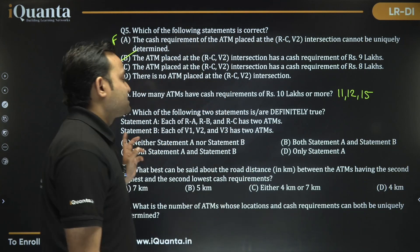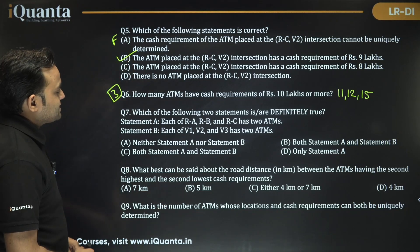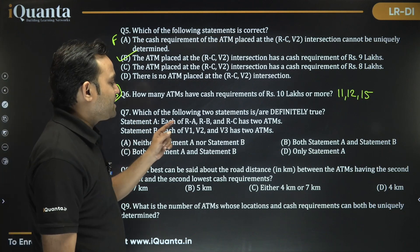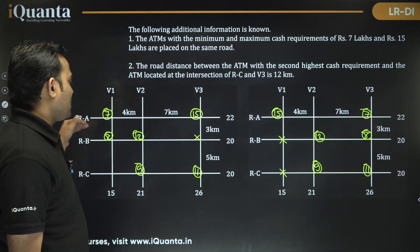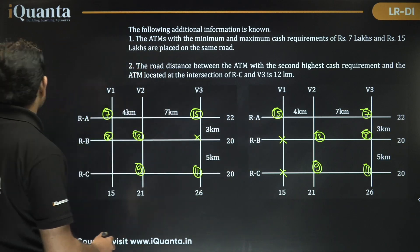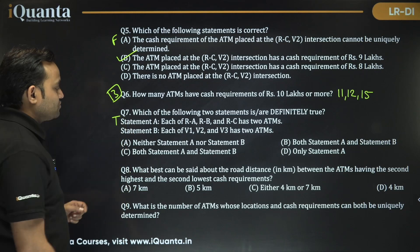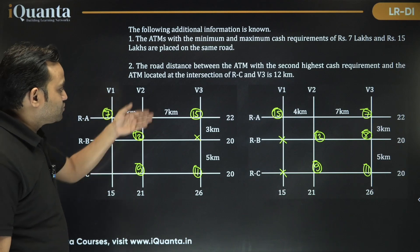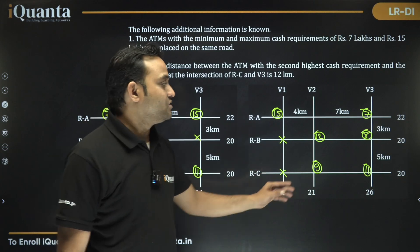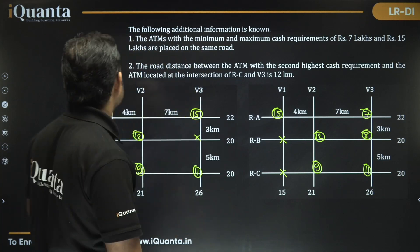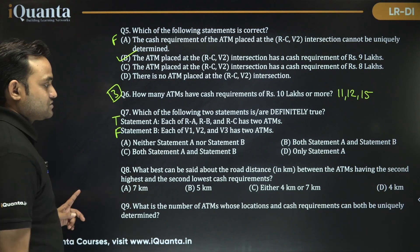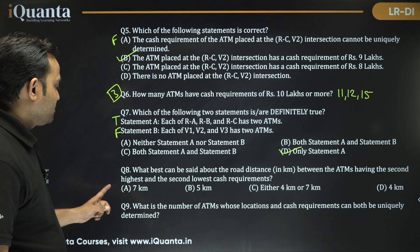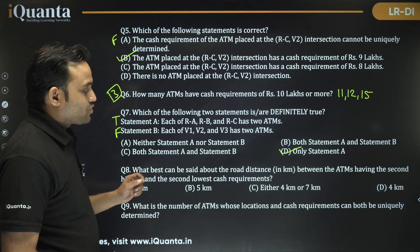Question 7: Which statements are definitely true? Statement A says each of RA, RB, RC has exactly two ATMs — in both cases, yes, each horizontal road has two ATMs. That is true. Statement B says each of V1, V2, V3 has exactly two ATMs — but in one case V1 has one ATM and V3 has three. So Statement B is not always true. Only Statement A is definitely true.